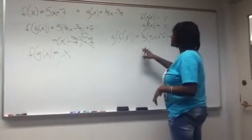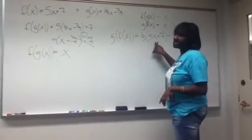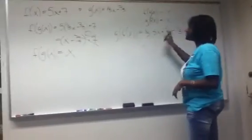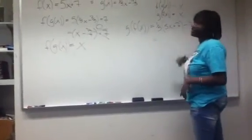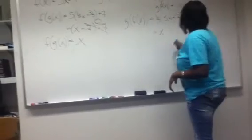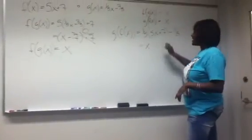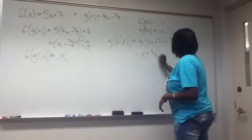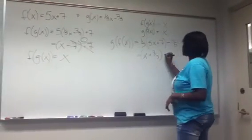So here you do the similar things by distributing the 1/5. So you get 1/5 times 5x, which is just 5x over 5, which also just equals x. Plus 1/5 times 7, which is 7 over 5. And then you still subtract 7/5.